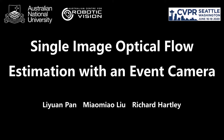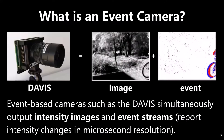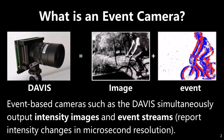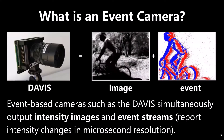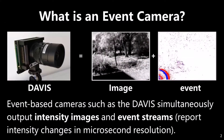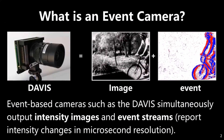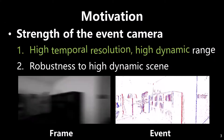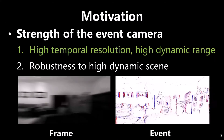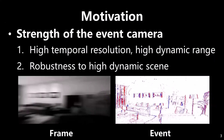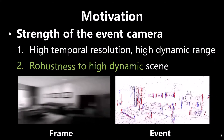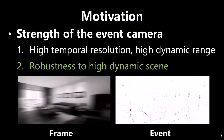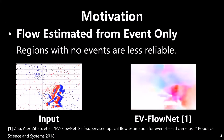Single image optical flow estimation with an event camera. Event-based cameras such as Davis can simultaneously output intensity images and events. They are gaining attention for their high temporal resolution, robustness to low lighting, and performance in highly dynamic scenes.